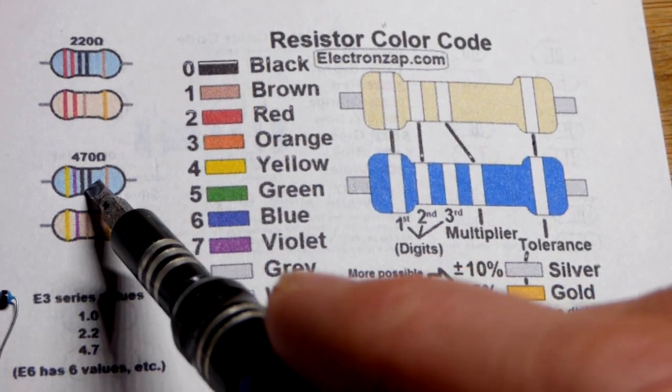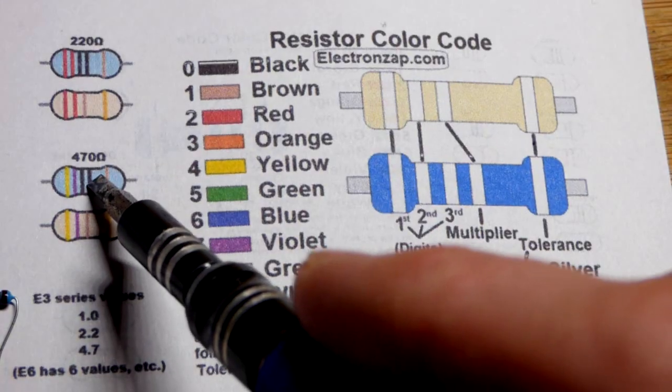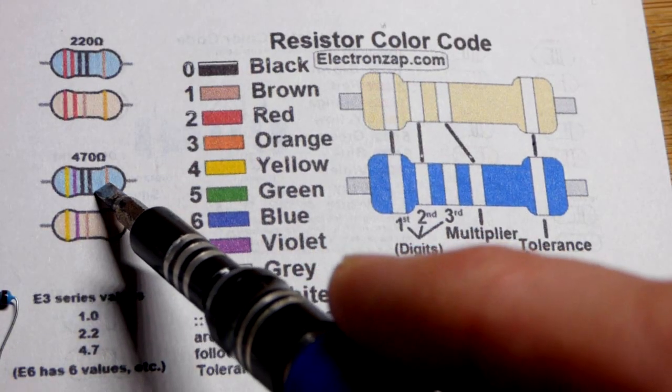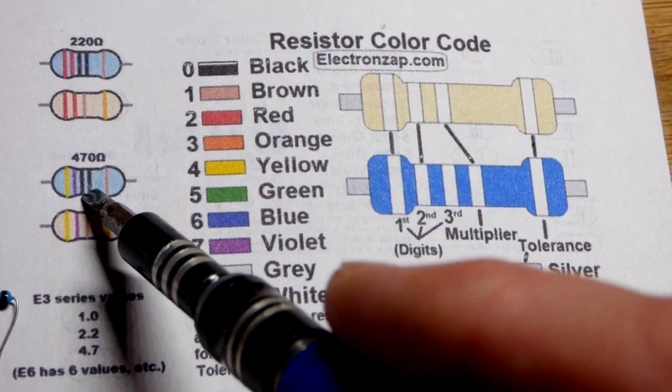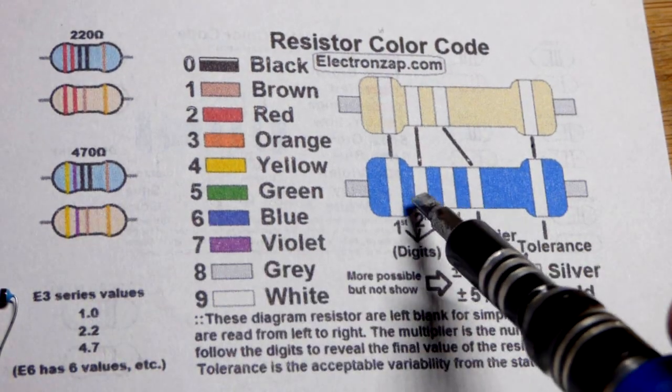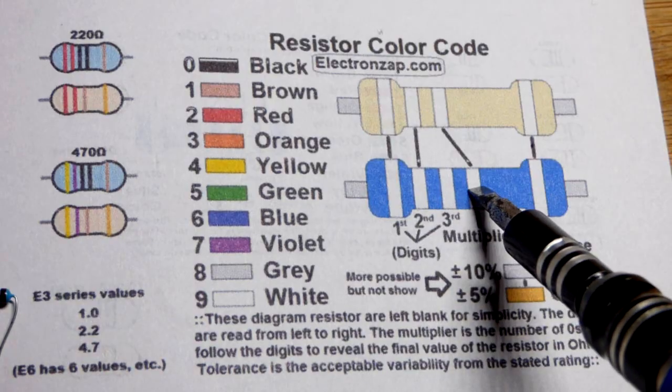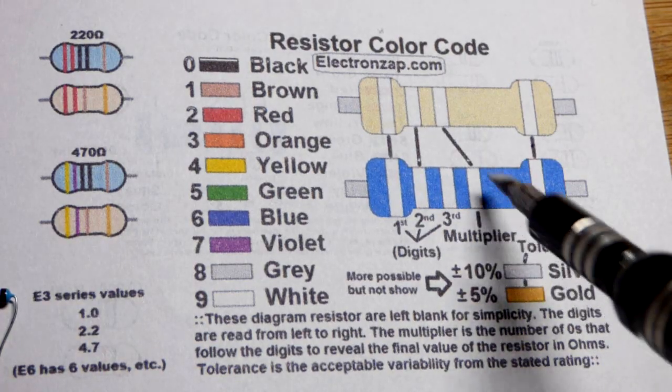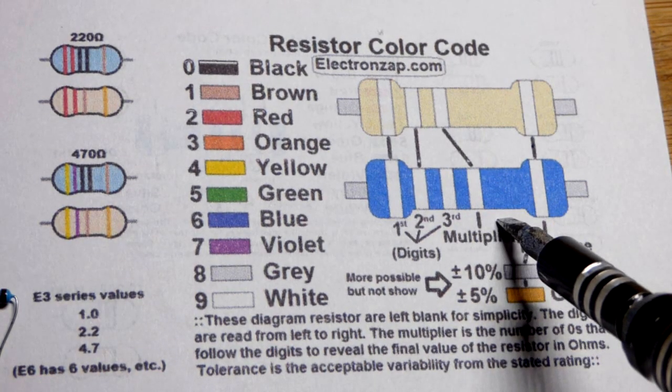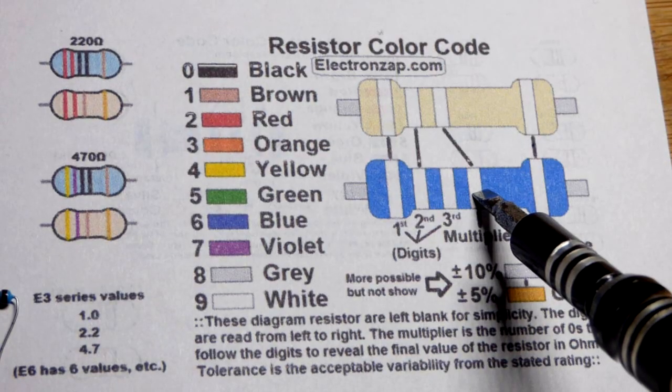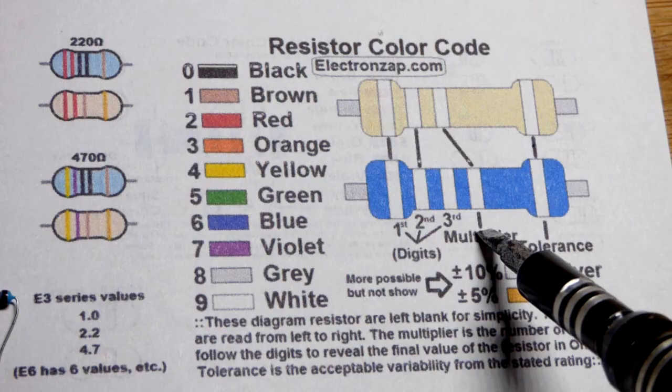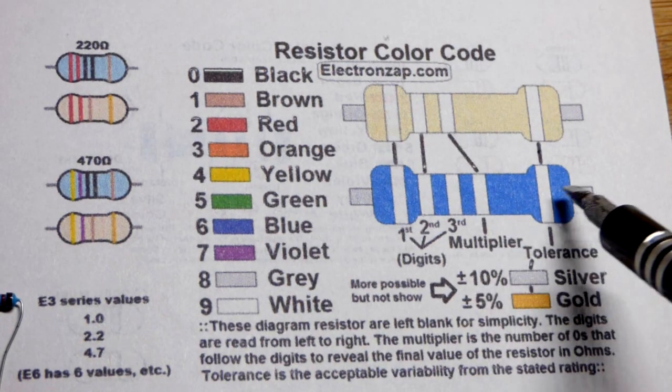So for the yellow violet which is the same as purple black, you have four seven zero and then no more zeros. Whereas if it's red that means there's two more zeros. So if there's black there that means times one, if it's red it means times a hundred.